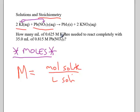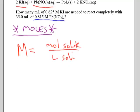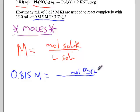So for example, the lead-2-nitrate is 0.815 molar. So 0.815 capital M, we're going to fill in the definition: moles of solute. Well, 0.815 is for the lead-2-nitrate, so that's moles of Pb(NO3)2 per liter of that solution.